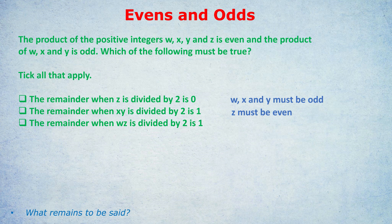Now let's answer the questions based on that knowledge. It seems to be about remainders — but it really isn't that bad. Statement one: the remainder when Z is divided by two is zero. That just means does two go into Z evenly? If the remainder is zero, that means two is a factor of Z. And we know it is because Z must be even — all even numbers can be divided by two with no remainder. So the first statement is definitely true.